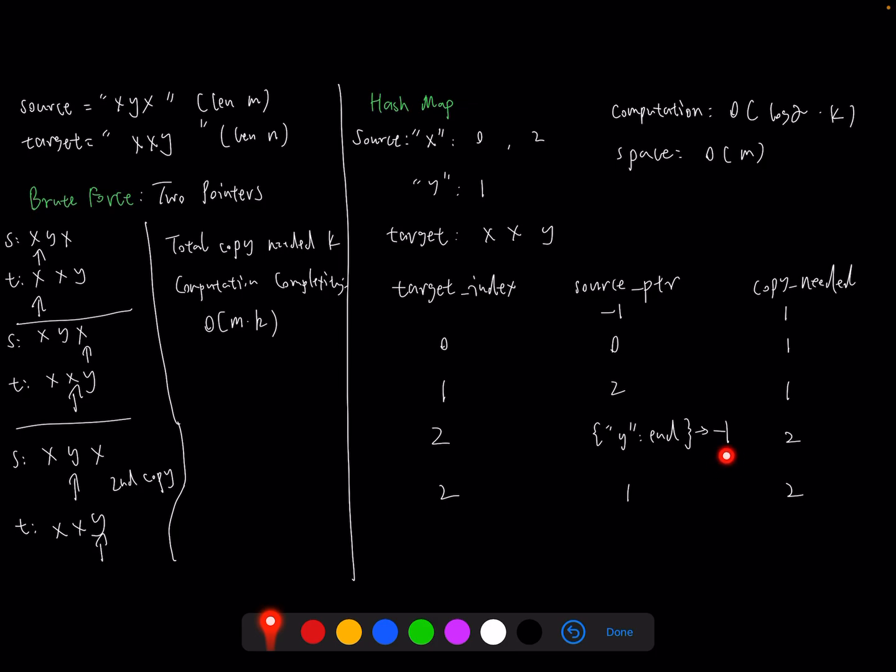Then we will do the same index again. Since we start with minus one, we are able to use the first index of the Y values. Then the copy is still keeping as two. Next, since we have already reached the end of the target array, we have done the whole process.